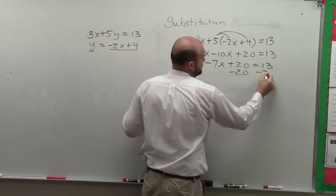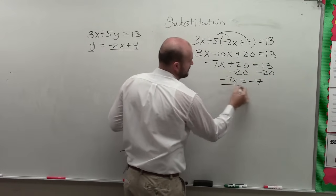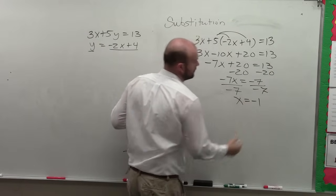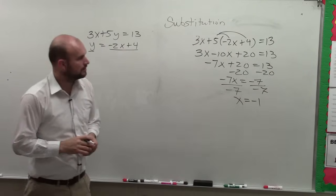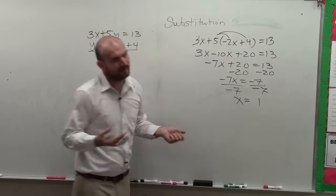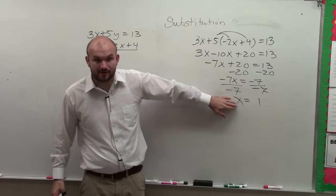Subtract 20. Subtract 20. Negative 7x equals negative 7. Divide by negative 7. Divide by negative 7. x equals positive 1. Negative 7 divided by negative 7 is positive 1. So does everybody see that? Now I know the value of x.